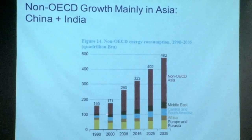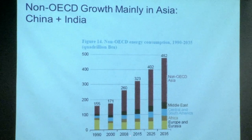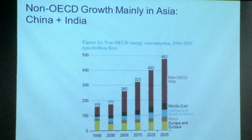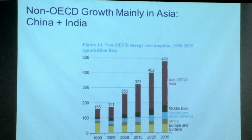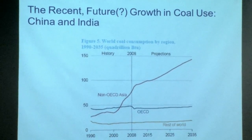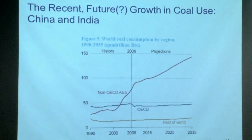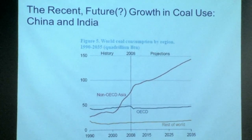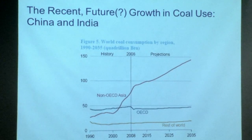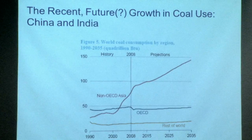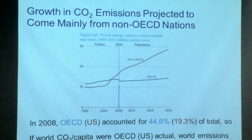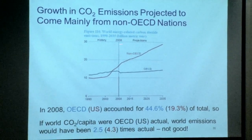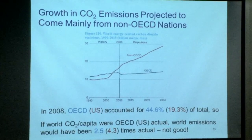Where is growth going to happen? Non-OECD Asia — mainly India and China, and Indonesia. Here's coal consumption: recall I said the coal market share has been growing. Where is that coming from? Non-OECD Asia — India and China. India and China have a lot of coal. As they move out of poverty, they're burning it — not unreasonable at one level. But that's how you get CO2 emissions growth. This is world energy-related CO2 emissions: OECD and non-OECD. The growth is non-OECD Asia burning coal, largely.